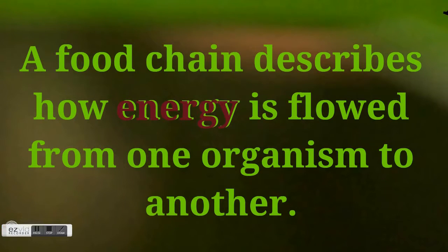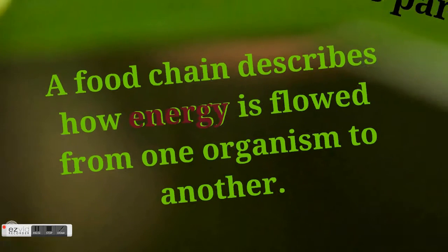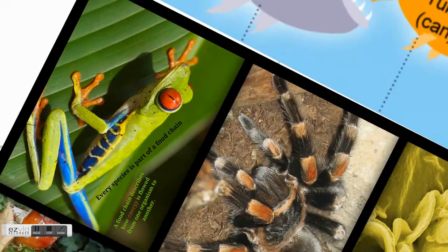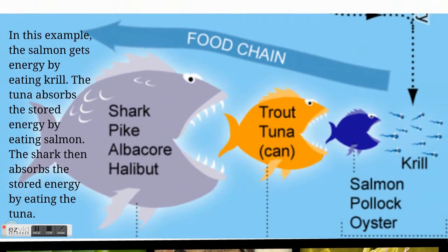Let's take a look at an actual example. In this picture, we have a salmon getting energy by eating the krill. The tuna absorbs the energy stored by eating the salmon. And the shark then absorbs the stored energy by eating the tuna. It's a food chain.